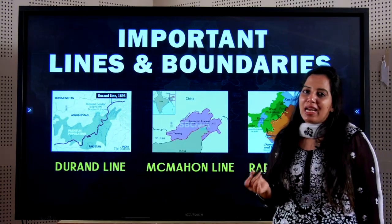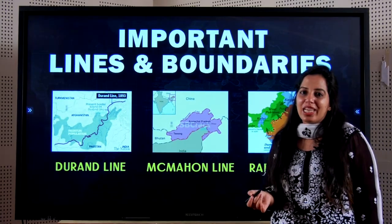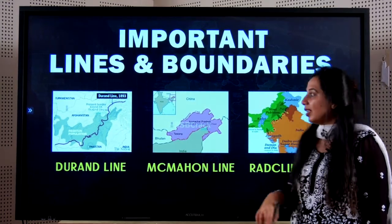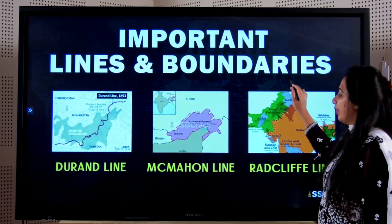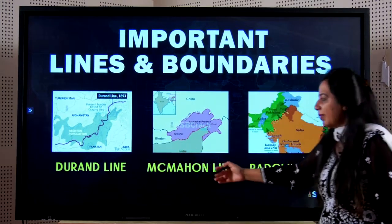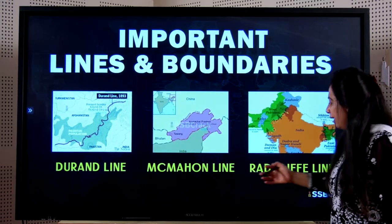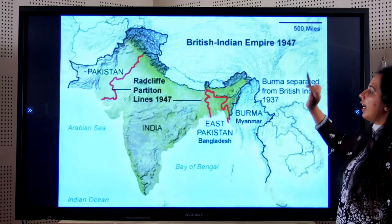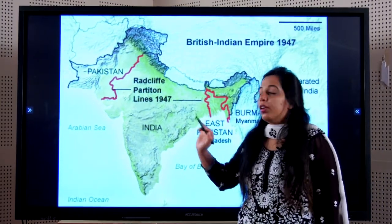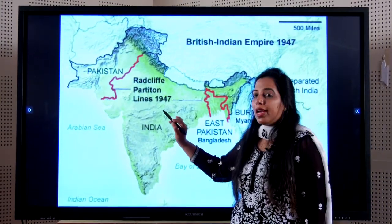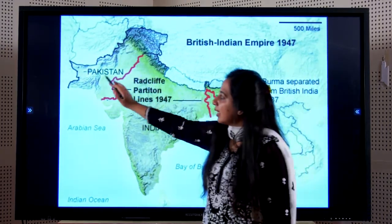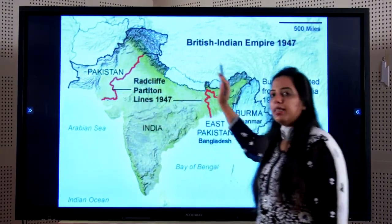Now we come to the last part of the chapter — the important lines and boundaries of India. We have three lines: the Durand Line, the McMahon Line, and the Radcliffe Line. The Radcliffe Line is the line that was drawn at the time of partition, and it separates India and Pakistan.